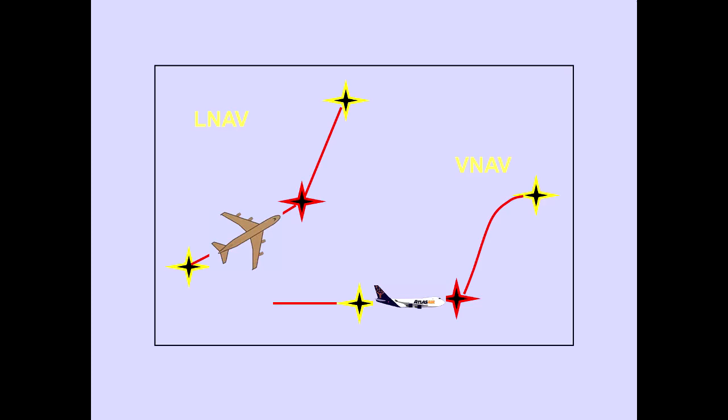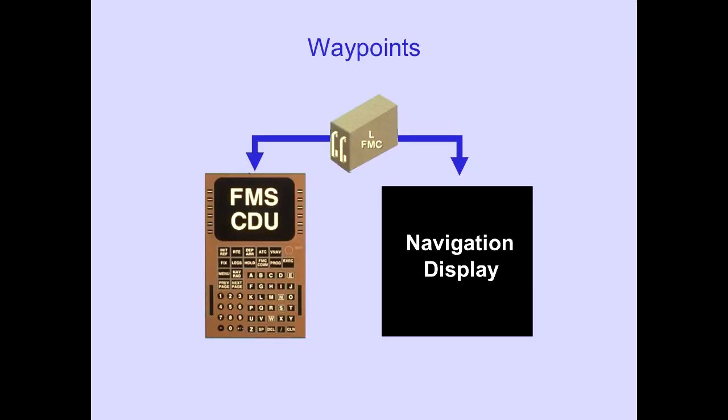The FMCs navigate in two dimensions, lateral and vertical, and are referred to as LNAV and VNAV. The flight plan contains both the LNAV and VNAV path. The waypoints of the flight plan are displayed on the FMS CDU and the navigation display. The navigation display is covered in flight instruments.